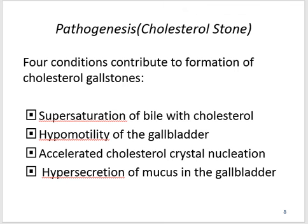Pathogenesis of gallstones of cholesterol type: four conditions contribute to formation of cholesterol gallstones. First, supersaturation of bile with cholesterol. Second, hypomotility of the gallbladder. Third, accelerated cholesterol crystal nucleation. Fourth, hypersecretion of mucus in the gallbladder.